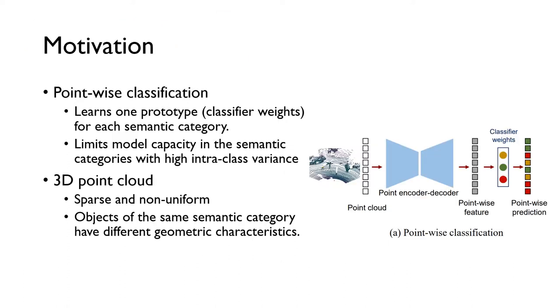A popular paradigm for 3D Point Cloud Semantic Segmentation follows the pointwise classification, where a neural network extracts pointwise features and feeds them into a classifier, predicting a label for each point. Following the view of prototype learning, these models can be viewed as learning one prototype for each class and aligning points with the label of the nearest prototype. However, the common single prototype per class design limits the model's capacity in classes with high intra-class variance.